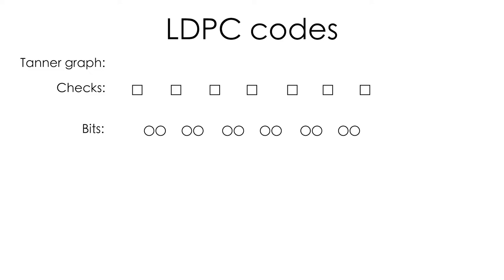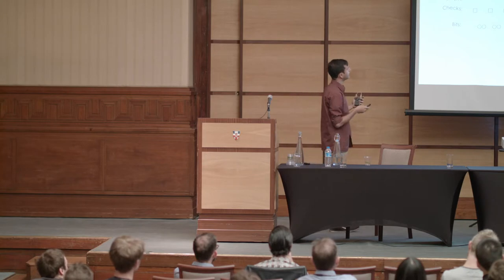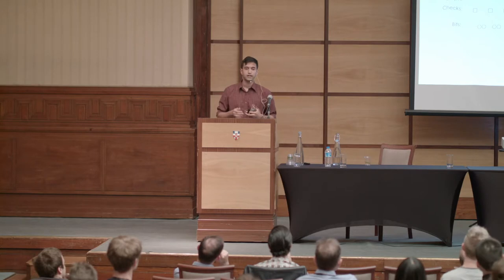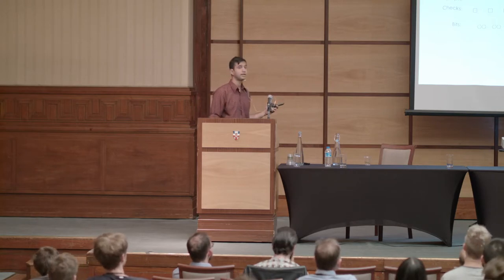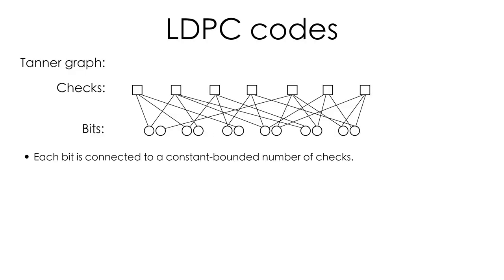When we talk about classical codes, there are different ways of describing them. One way is to use the parity check matrix. An alternative is a graph-theoretic way, which is useful when studying LDPC codes. Graph-based algorithms such as belief propagation can be very easily analyzed by thinking of the error-correcting code as a graph. The protagonists are the checks and the bits. Checks are represented as square nodes and bits as circular nodes. If a bit participates in a check, we connect these two objects via an edge. An LDPC code corresponds to a family of these graphs where every check and every bit is only connected to a constant number of nodes.